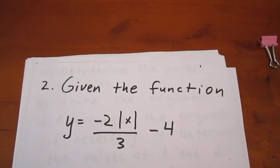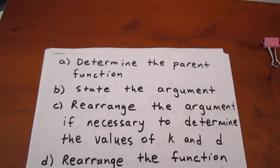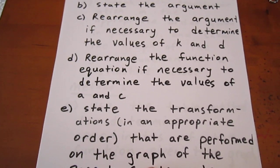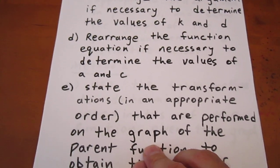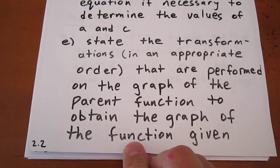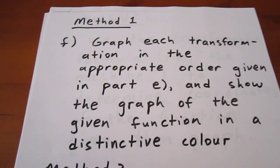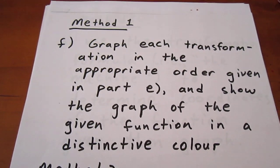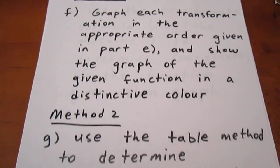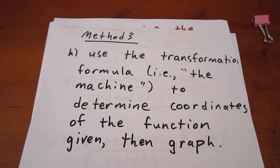In order to do this, we're going to first determine the parent function, state the argument, rearrange the argument to determine the values of k and d, which are horizontal transformation indicators. We're going to rearrange the function equation, if necessary, to determine the values of a and c, which are vertical transformation indicators. Then we're going to state the transformations in an appropriate order. We're then going to graph the function in three different ways: showing each transformation individually, using the table method, or using the transformation formula, which we sometimes call the machine.